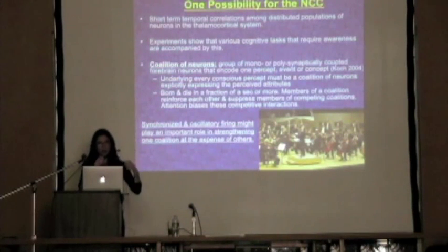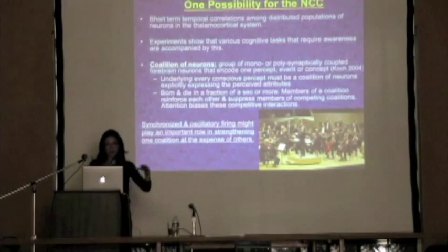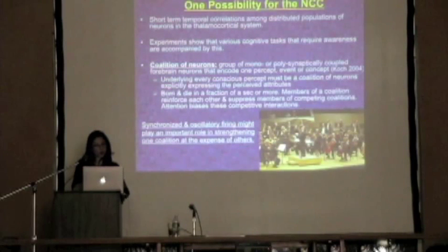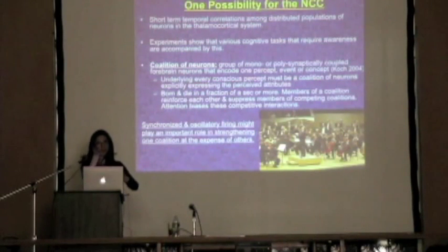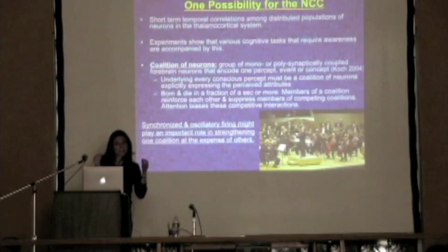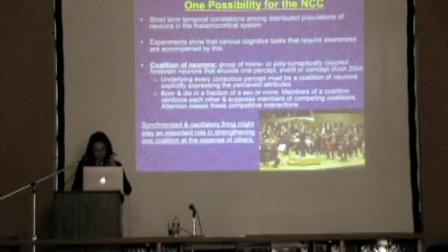Think of an orchestra: at the beginning when they're all warming up, things are disjointed and out of tune. Then the conductor comes in — they're not all playing the same note (that would be like an epileptic seizure), but they're playing different things in harmony together. Similarly, you have these synchronized oscillatory coalitions of neurons that are coupled to encode one percept. They stay in consciousness for a while, then go down, and another coalition wins — born and dying in fractions of a second. Members of a coalition can reinforce each other and suppress others. Attention can bias these coalitions; if you attend to something, you can keep it in consciousness longer.